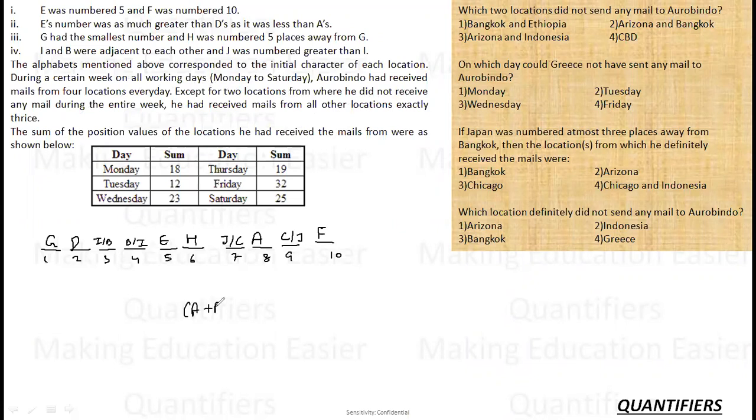He had received mails from all the other locations exactly thrice. So this is A, B, C, D, E, F, G, H, I, and J. These were 10 locations. There were two locations—let us say B or D left it, F or H left it—there were two locations left it. The sum of the position values of the locations he received mail from is shown below: 18 is the total of 4, 12 is the total of 4, 19 is the total of 4, 32 is the total of 4, 25 is the total of 4.